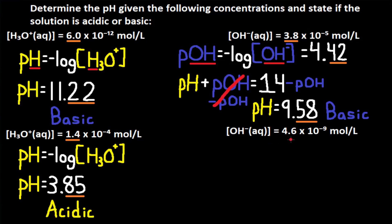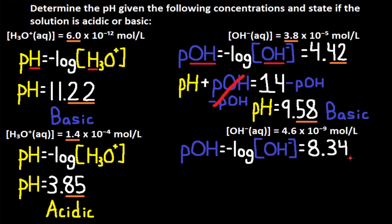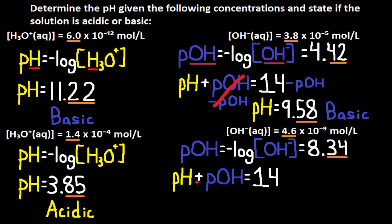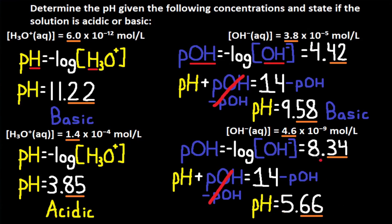The concentration of OH- is equal to 4.6×10⁻⁹. We can't get pH directly, but we can get pOH. pOH equals the negative log of OH-, so we take the negative log of 4.6×10⁻⁹ and get pOH = 8.34. OH- has two sig digs, so pOH has two decimal places. Using pH plus pOH equals 14, we isolate pH: pH equals 14 minus pOH, giving pH = 5.66 with two decimal places. Since 5.66 is less than 7, the solution is acidic.